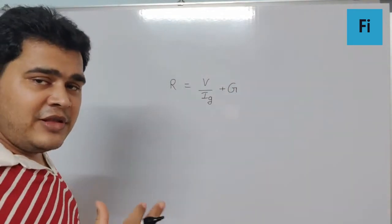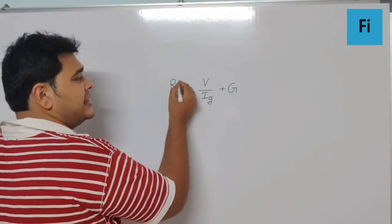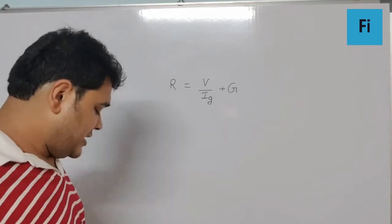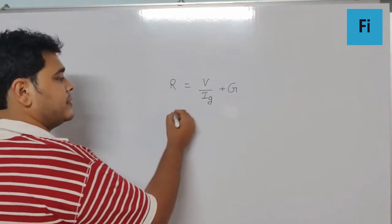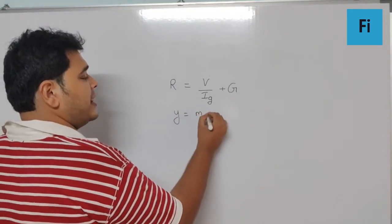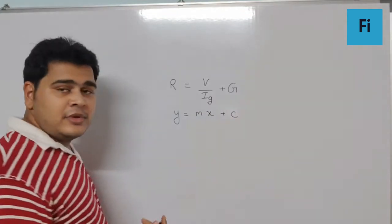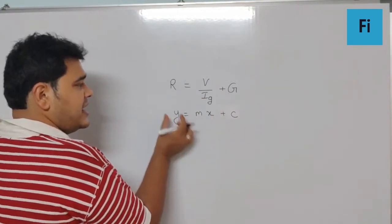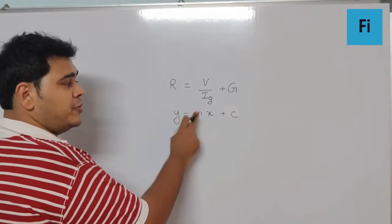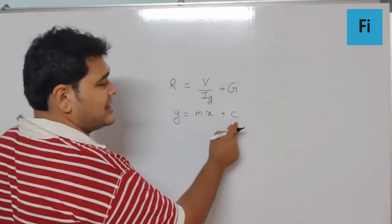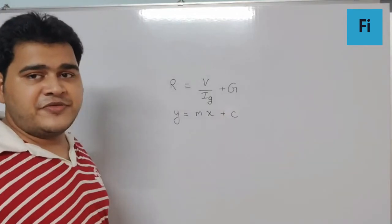So now if we actually try to plot a graph of this taking R as the y-axis, this is going to be MX plus C where X is going to be V, Y is going to be R, so slope will be 1 upon Ig and the Y intercept will be positive G.